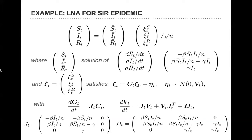For the SIR model, the LNA gives you the classical epidemic ODE as the first component, then two matrix systems for the variance and diffusion — all functions of the macroscopic state. Once you solve those, you know the distribution. With LNA things work — you have a tractable distribution — which is not the case with the other approximate models. However, it is not always accurate; it requires some trade-off in terms of accuracy versus speed.